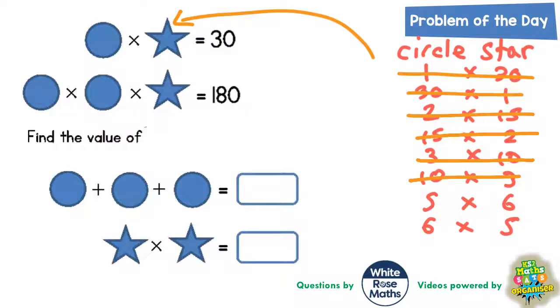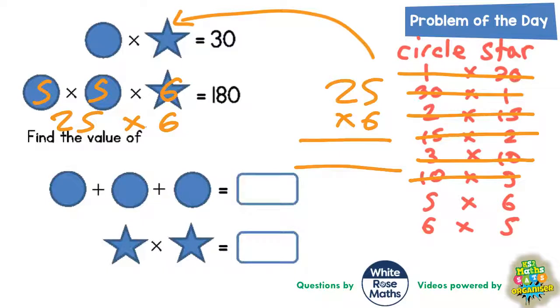Now we haven't got too many more to try, so let's try the circle being worth 5 each and the star being worth 6. Well, 5 times 5 is 25, so the question is what is 25 times 6? If you can't work it out in your head, 6 times 5 is 30 and 6 times 2 is 12, plus the 3 carry is 15. Now that makes 150, but we're trying to make 180, so again that is no good.